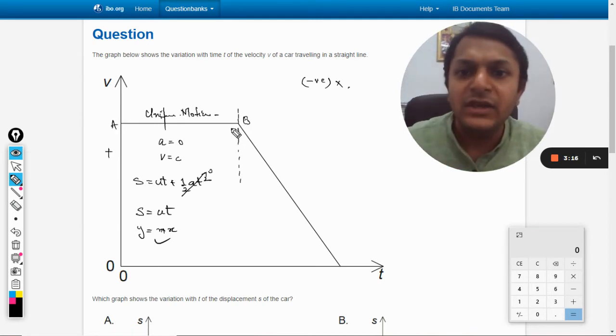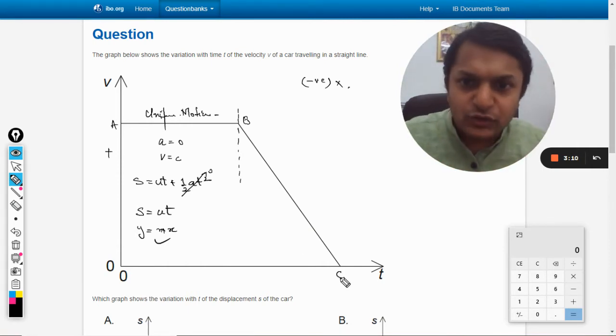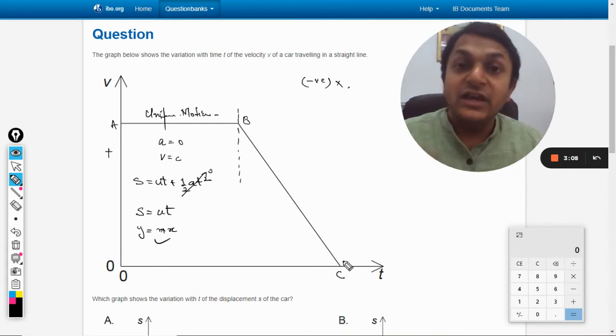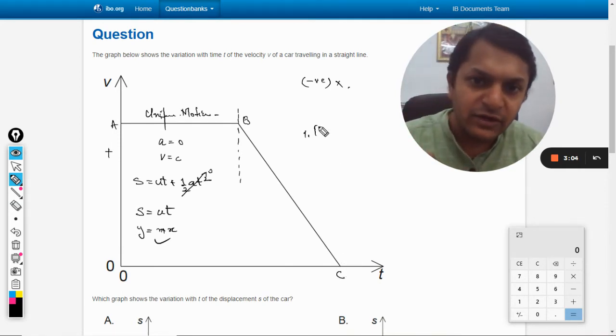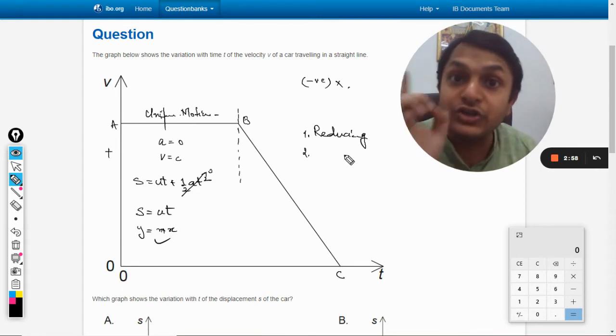Now, from this point from A to B let us say the displacement graph will be a straight line. But afterward, when it is going from B to C, the point to be noted is velocity has started reducing. Number one: velocity is reducing. Number two: it is reducing at a constant rate.